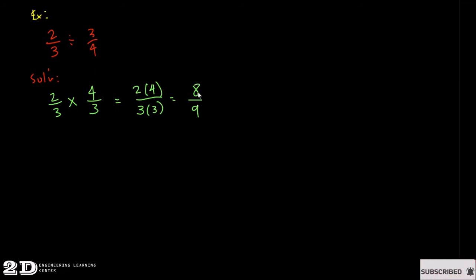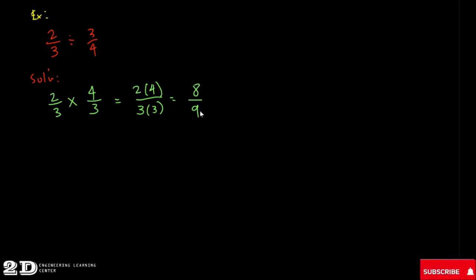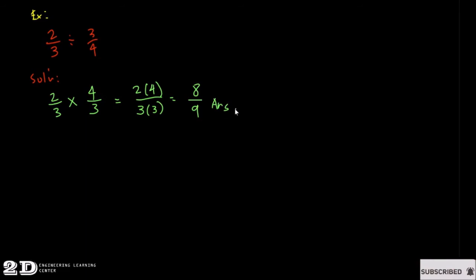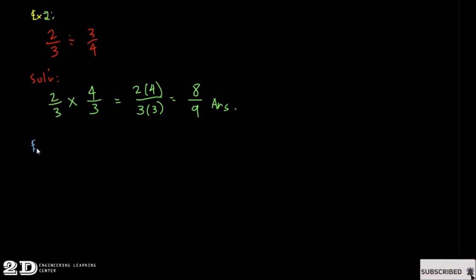Eight over nine is already a proper fraction because the numerator is smaller than the denominator, and it is also in lowest terms because there is no number that divides both the numerator and denominator. So eight over nine is our answer.